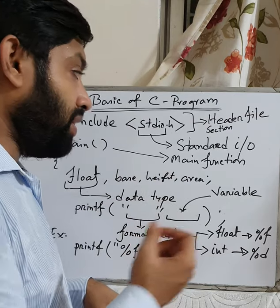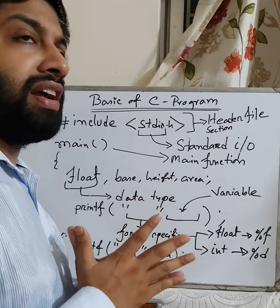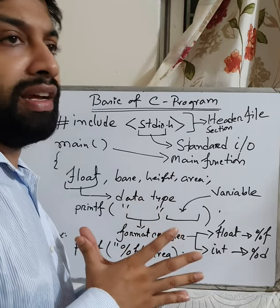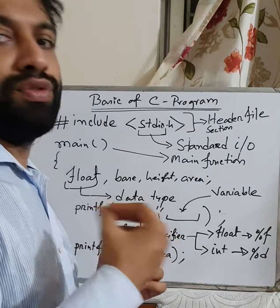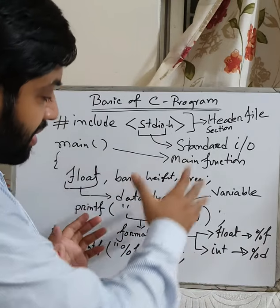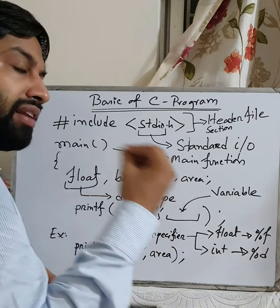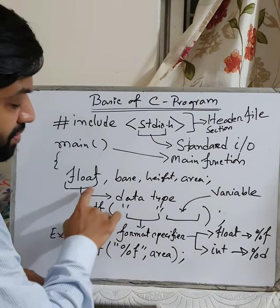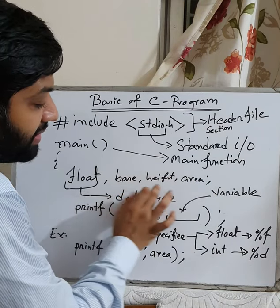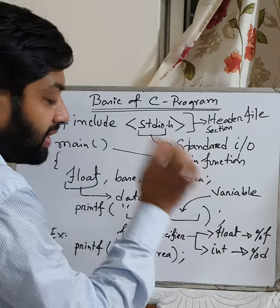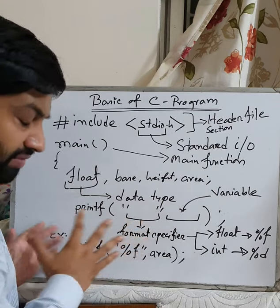For this program we are finding the area of a triangle. The formula is: area = 0.5 × base × height. Our data type will be float because we are calculating a fractional number. After that we use variables like base, height, and area.